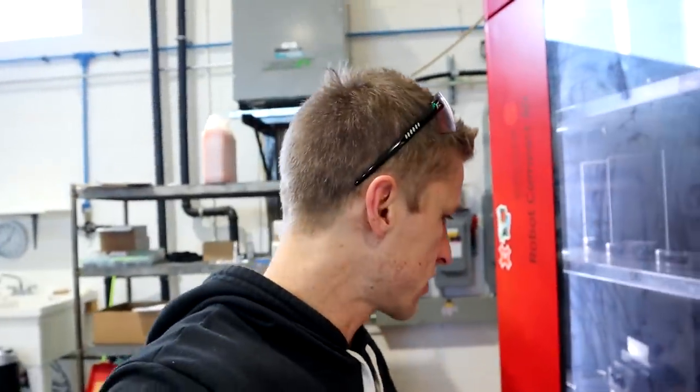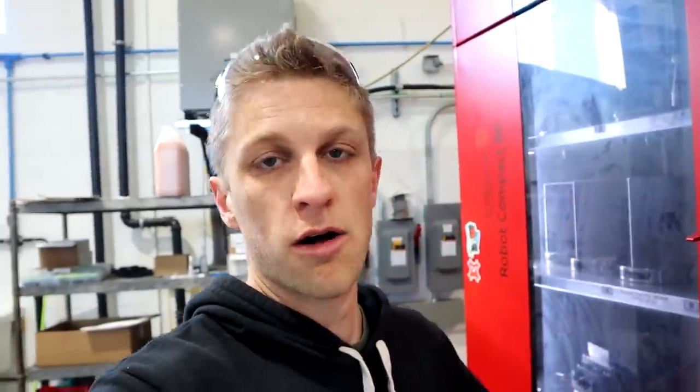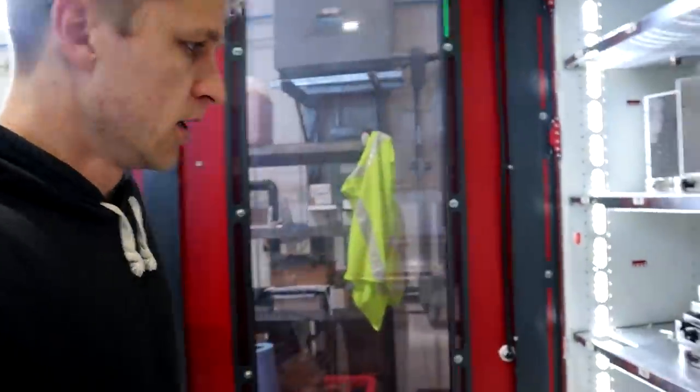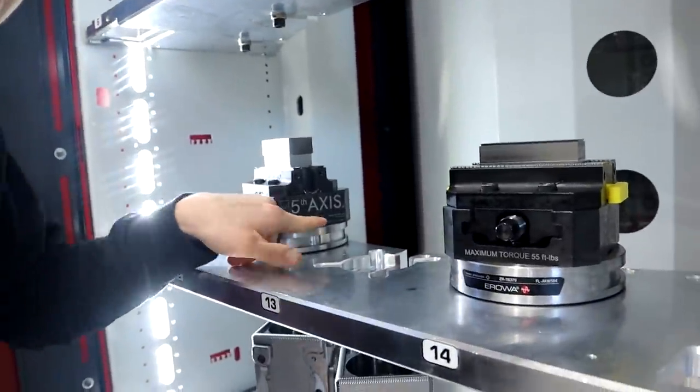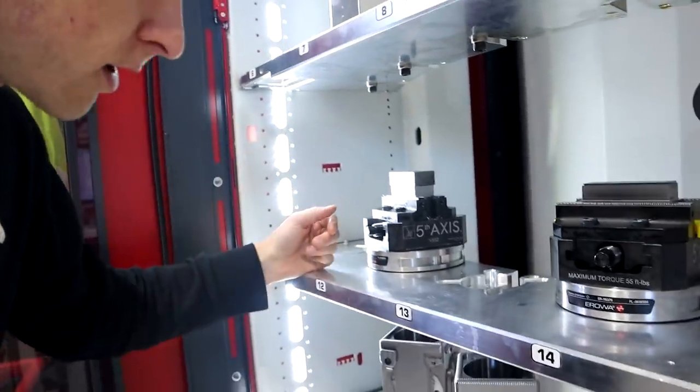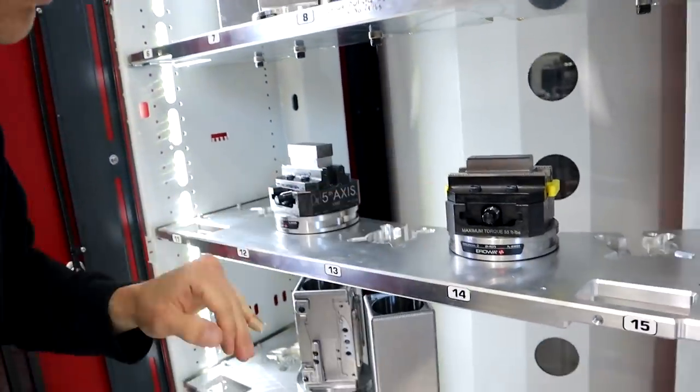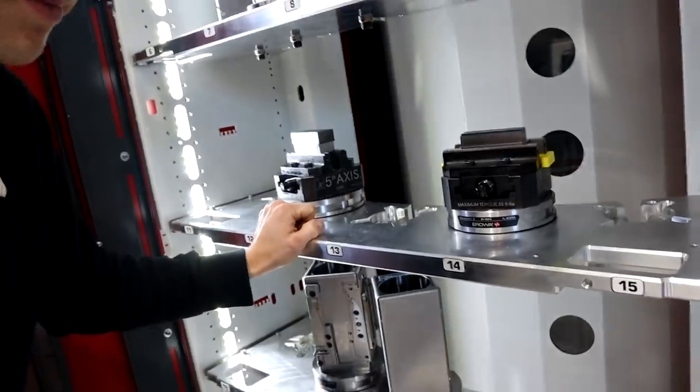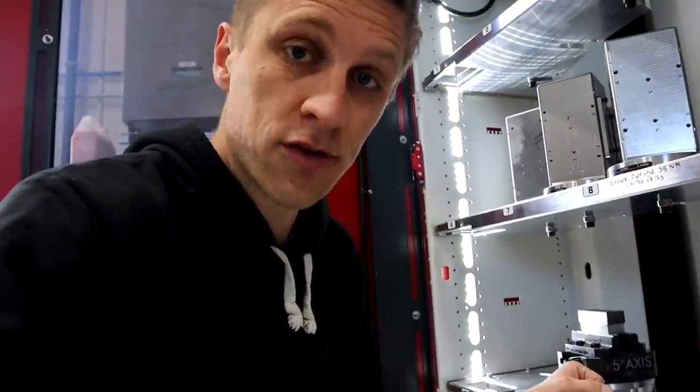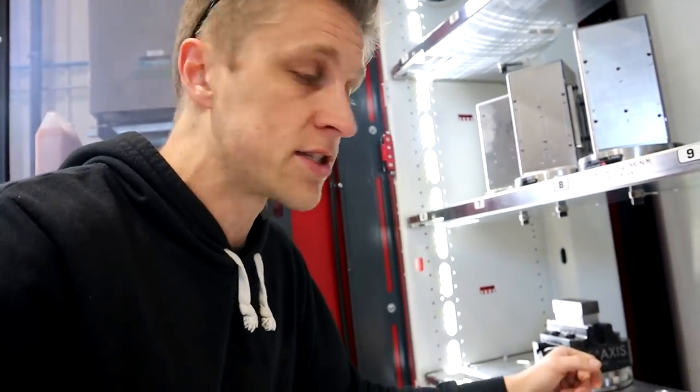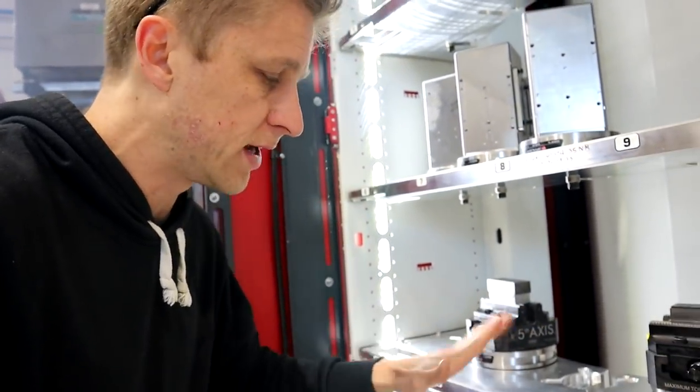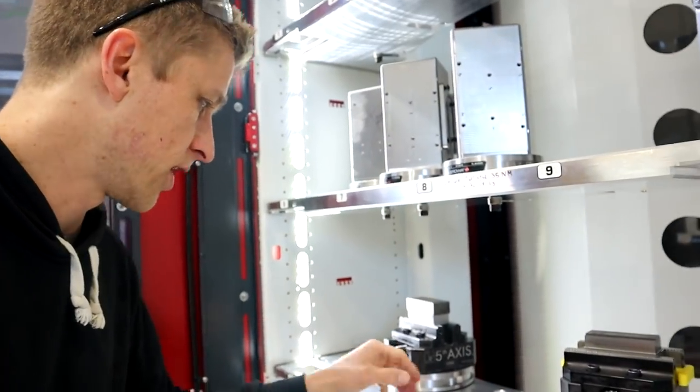Let's make some custom vise jaws for our fifth axis vises. So these guys right here, fifth axis, they make a nice vise. I've got two of them mounted in the Kern. I use them quite a lot for doing clamps and fixtures and lots of little stuff. I don't use them for production, but I need to make stuff, so I use these for that.